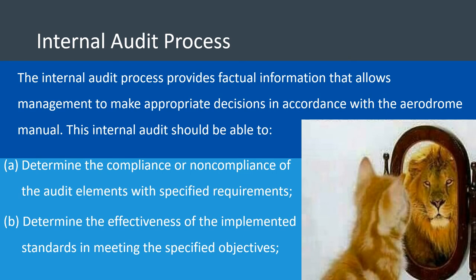A step beyond inspection is the internal audit process. You have inspected, identified the gap, and submitted for corrective actions to be taken — but how do we know that you are still compliant? That is when we introduce the internal audit process. It helps to confirm that the way you see yourself is truly who you are. The internal audit process provides factual information that allows management to make appropriate decisions in accordance with the aerodrome manual, and determines compliance or non-compliance of the audit elements with specified requirements.